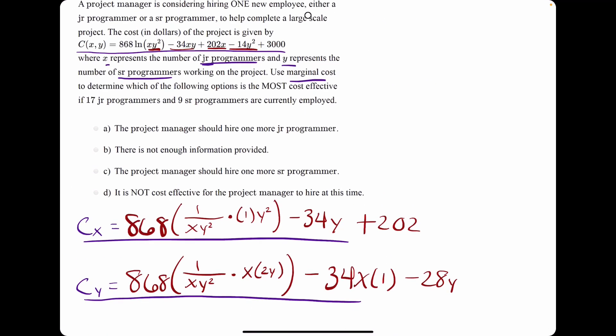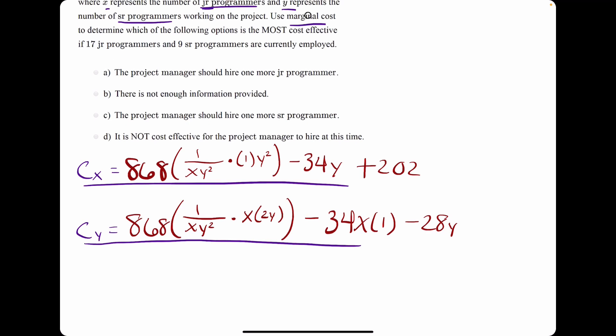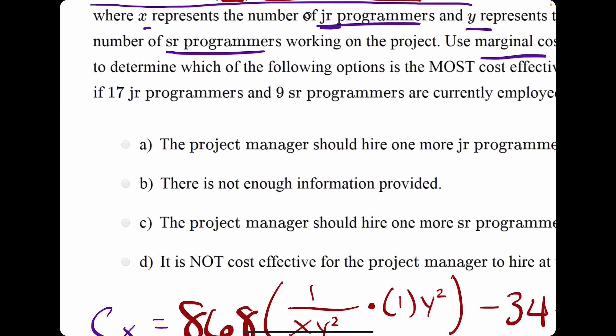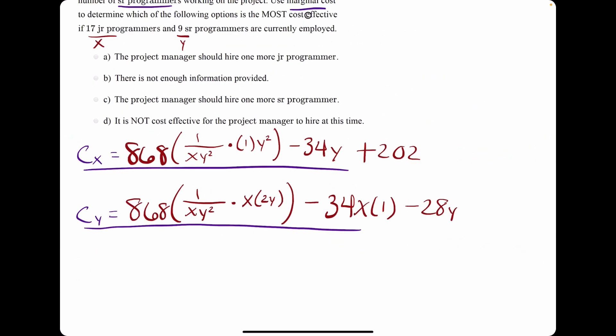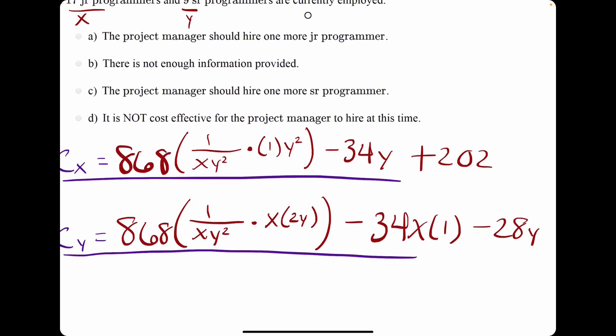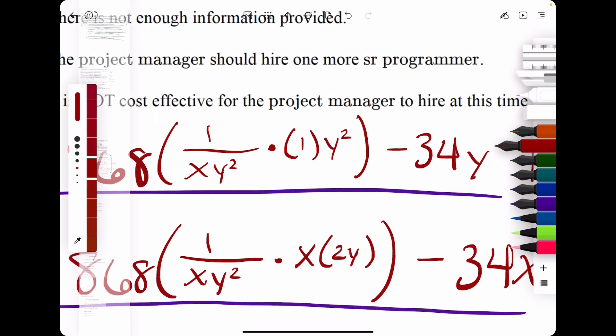We have Cx and Cy. I may simplify them a little bit, and then what we'll do is plug in 17 for x and 9 for y. We will be looking for the more negative answer to tell us who we will be hiring. Before we plug in values, I'm going to simplify this just a little bit. We have in here a y squared.